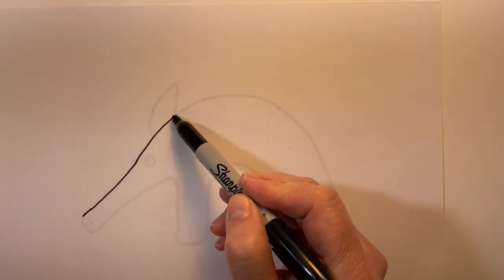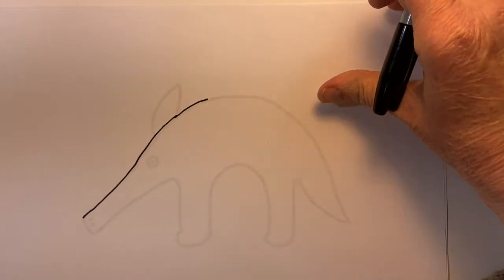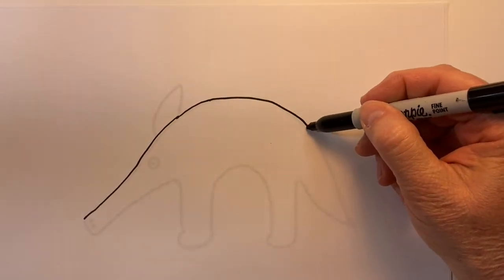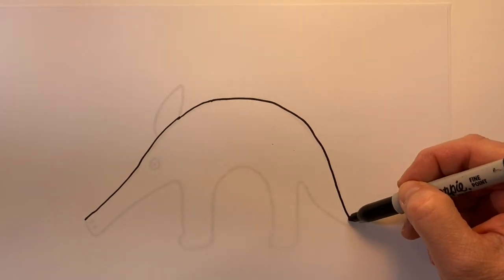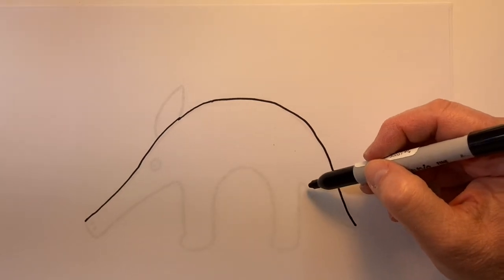I'm creating the back of the Anteater with kind of a large arch. Remember, if I go too fast you can back up and definitely watch this again, maybe even in slow motion.